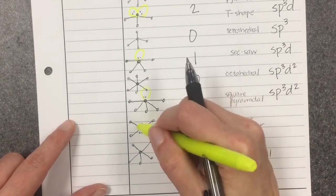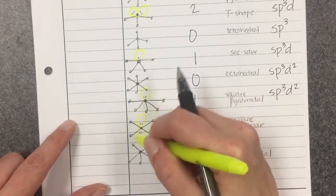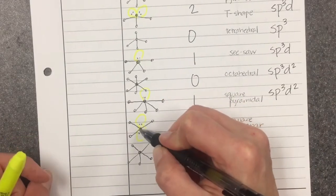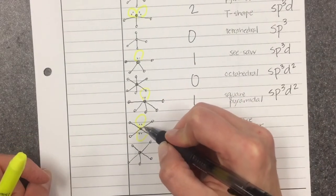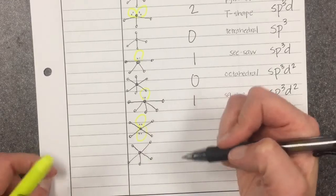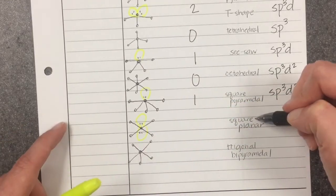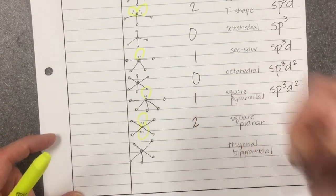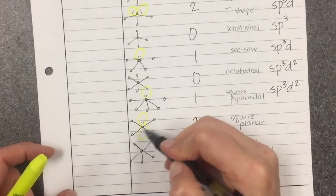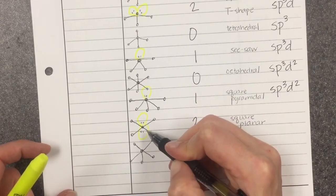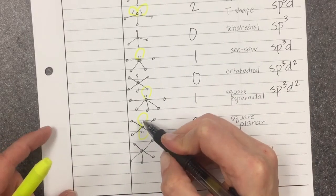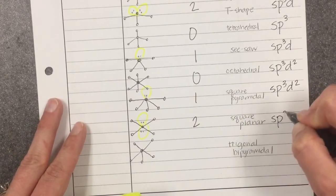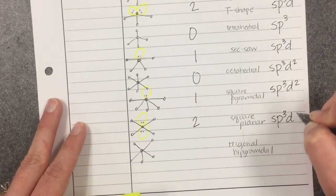This one is only four terminal atoms but also two lone pairs of electrons — one lone pair on top and one lone pair on the bottom — so the four terminal atoms take the corners of a square. There are two lone pairs, four orbitals for bonding and two more for the lone pairs. So again, SP3D2.